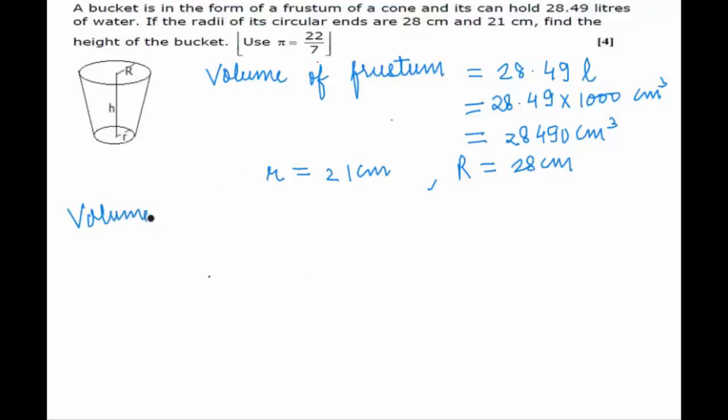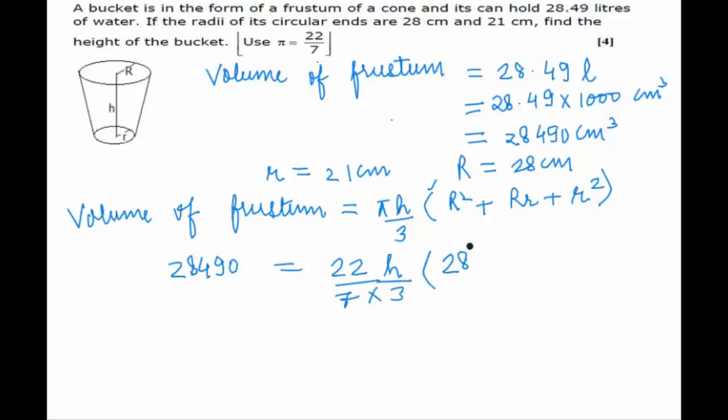So we substitute the values: 28,490 equals 22/7 times h/3 times bracket 28 square plus 28 into 21 plus 21 square.